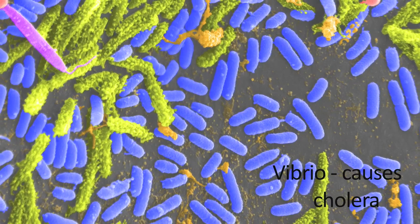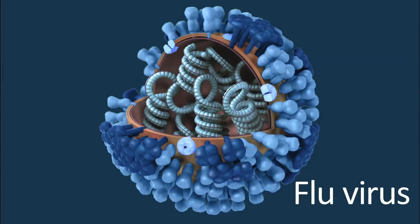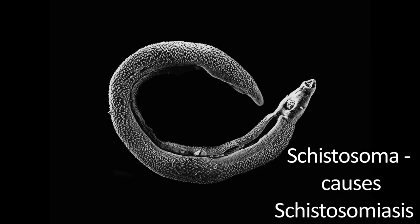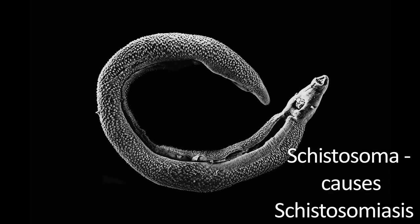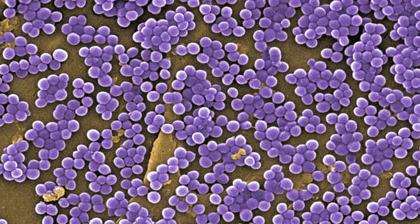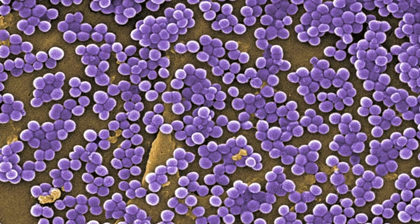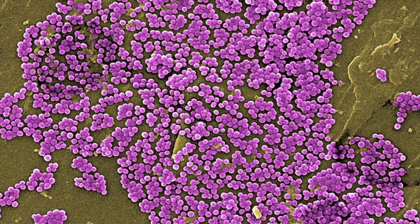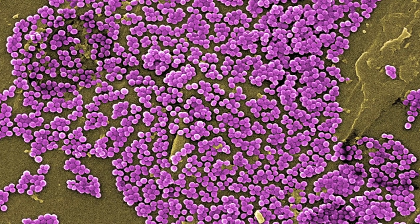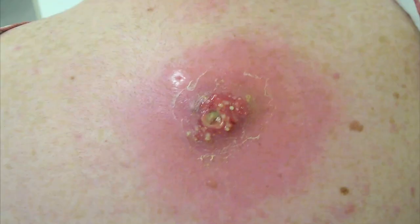Pathogens can be bacteria, viruses, protozoans, and several parasitic worms. One bacteria that can become pathogenic is Staphylococcus aureus, a species that is a normal part of our body's flora. It can cause infections, and some of these infections can get pretty nasty, even life-threatening.